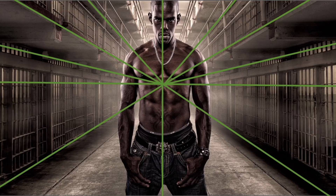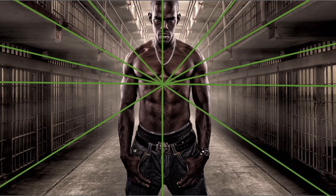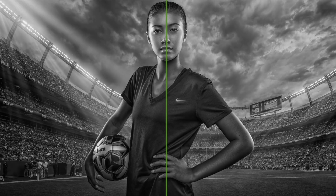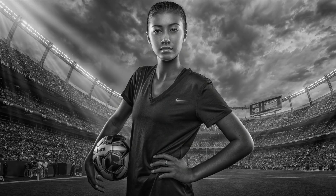Let's talk about number four: leading lines or forced perspective. You've probably been taught this too. Here we have rapper and actor Mustafa — look at all those lines forcing you to him. I use this all the time. This is sort of my trademark when it comes to athletes: finding a situation where I can have leading lines forcing the viewer's eye attention to them. Oh, another triangle.